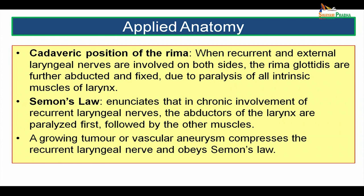Cadaveric position of the rima: when recurrent and external laryngeal nerves are involved on both sides, the rima glottidis are further abducted and fixed due to paralysis of all intrinsic muscles of the larynx. Semon's law enunciates that in chronic involvement of the recurrent laryngeal nerves, the abductors of the larynx are paralyzed first followed by the other muscles. A growing tumor or a vascular aneurysm compressing the recurrent laryngeal nerve obeys Semon's law.